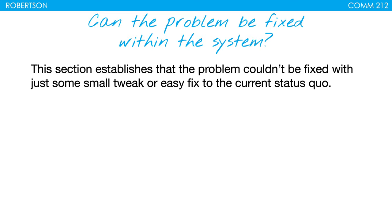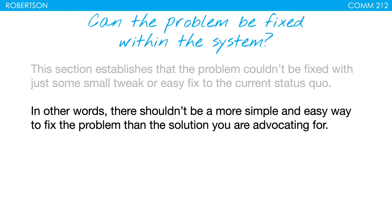Can the problem be fixed within the system? This section establishes that the problem couldn't be fixed with just some small tweaks or an easy fix within the current status quo. There shouldn't be a simpler way to fix the problem than the solution you're advocating for. For example, if we're talking about healthcare in the United States, do you need to get rid of the entire Affordable Care Act, or can you make small tweaks within what's already passed? Do we need a huge change, or could smaller changes work?